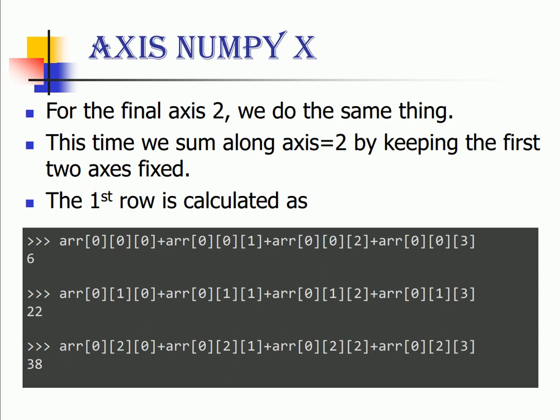The first row would be calculated using the sum as shown in the given diagram wherein the first element of the first row would be array of 0,0,0 plus 0,0,1 plus 0,0,2 plus 0,0,3 considering all the varying elements of my second axis.